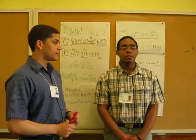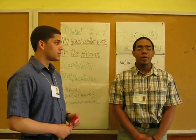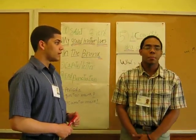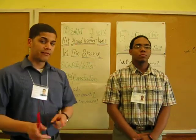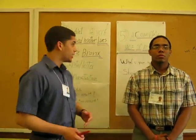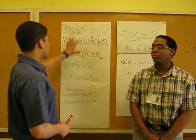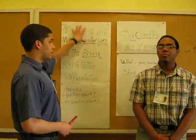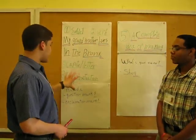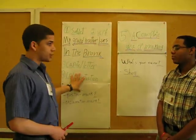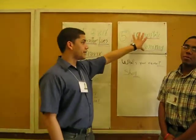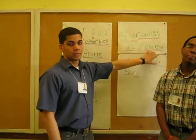If you want to make a good sentence in English, you have to know five points. The five points you have to know in English are: subject, verb, capital letters, punctuation, and a complete idea or meaning.